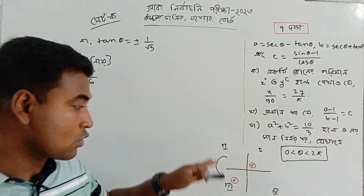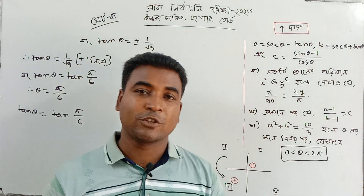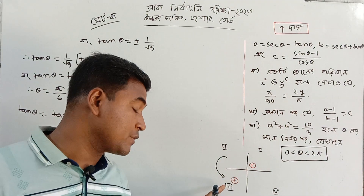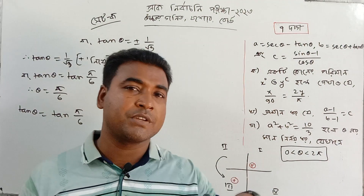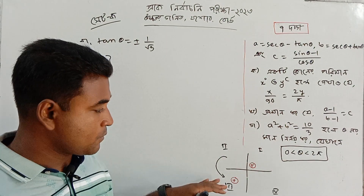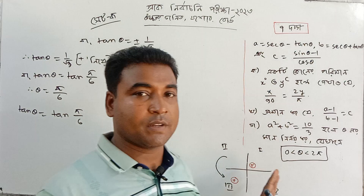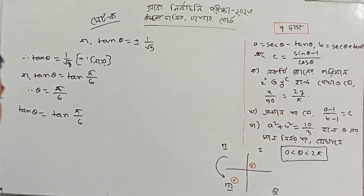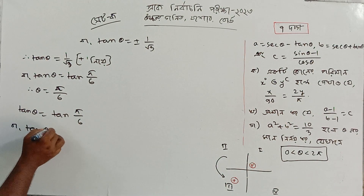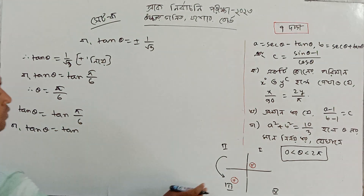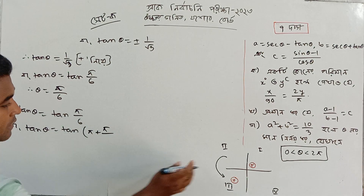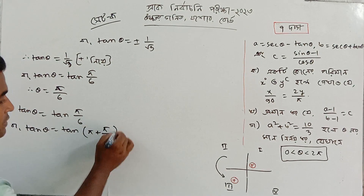In the second quadrant, tan is negative. Tan is positive in the first and third quadrant, and negative in the second and fourth. So we use the second and fourth quadrant. We had a class on this in our channel — it is the basic part of this chapter, 8.3.